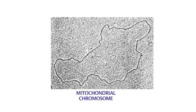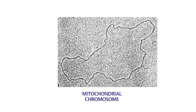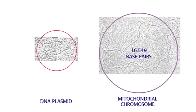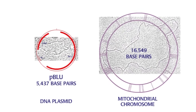The mitochondrial chromosome preserves many features like bacteria. First, they are circular molecules. The human mitochondrial chromosome is only 16,549 base pairs long, which is not much larger than any bacterial plasmid.